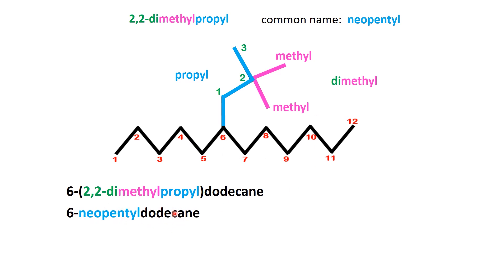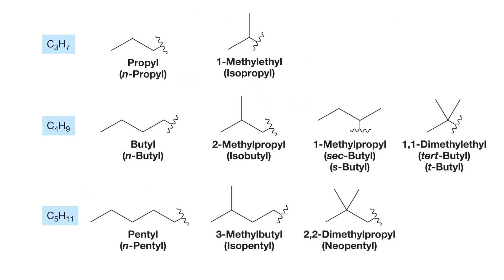In the previous examples, we explored both systematic nomenclature and common nomenclature to name complex substituents. While each method has its place, I personally prefer systematic naming — it's precise, universally recognized, and perfect for describing even the most complex structures without ambiguity. Common names, though convenient for simpler or well-known compounds, often lack the clarity needed as molecules become more intricate. Thank you for watching. I hope this lesson has boosted your confidence in tackling complex substituents. Don't forget to like, share, and subscribe for more organic chemistry content. See you in the next video.